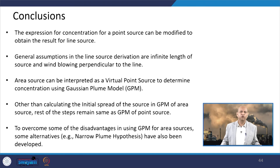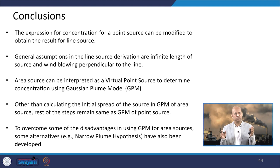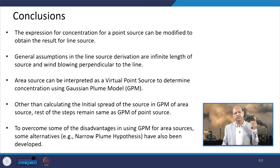In summary, we have seen how the concept of the Gaussian dispersion model is extended from point source to line source, and from line source to area source — or the area source treated as a virtual point source. The expression of concentration for a point source can be modified in different ways and results obtained accordingly.